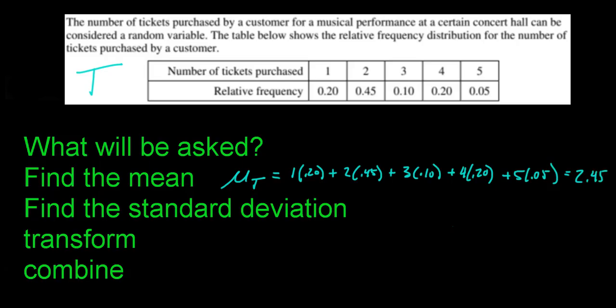This is the mean, so if we repeat this process over and over again — someone calls and we sell two tickets, someone calls again and we sell one, then five, then two — if we repeated this many many times, the average in the long run would be 2.45. That tells you on average every time that phone rings, we sell an average of 2.45 tickets. Obviously we won't sell exactly 2.45 on any one call — it's a mean in the long run.